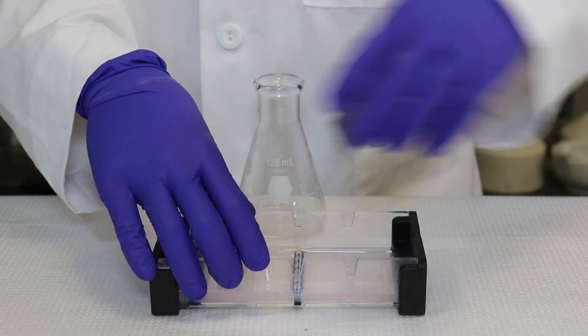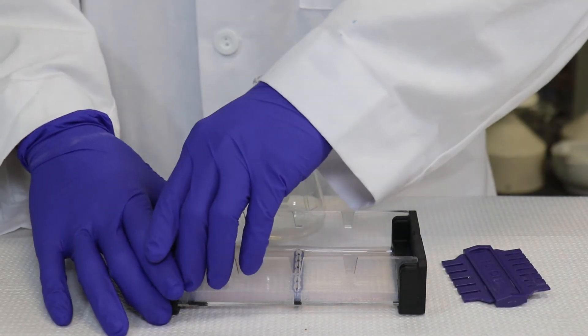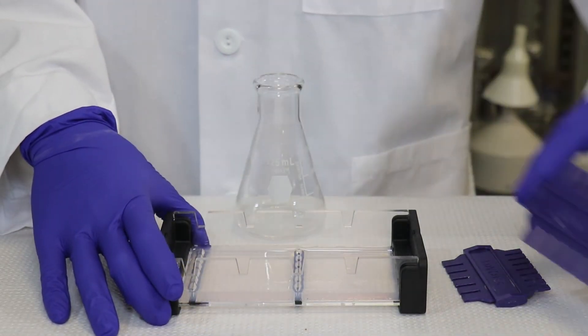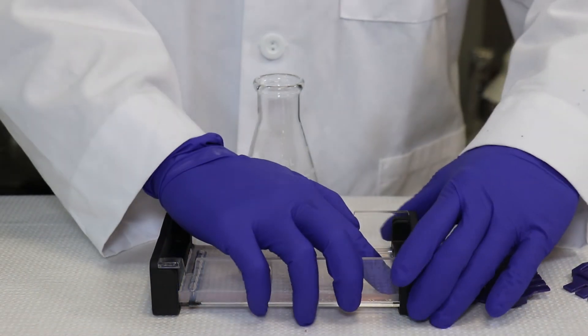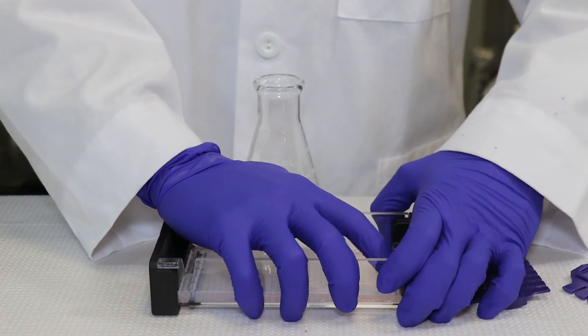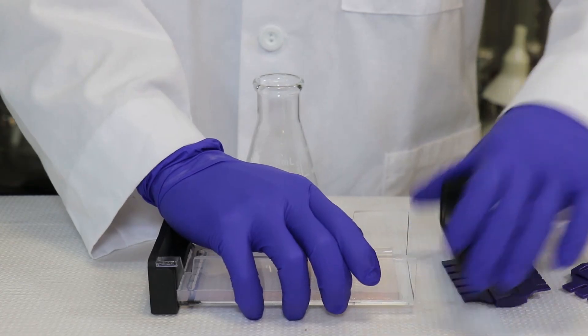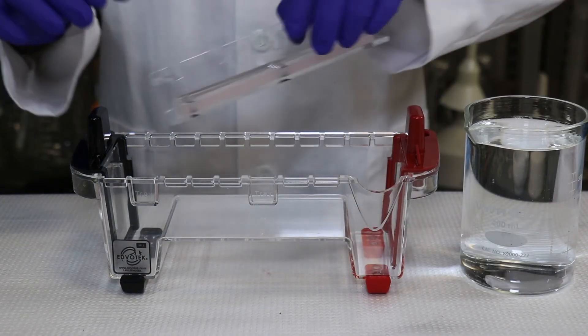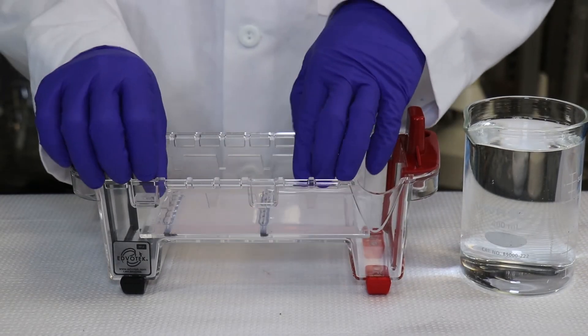Step 7: Carefully remove the end caps and comb. Take particular care when removing the comb and end caps to prevent damage to the newly formed wells. Step 8: Place the gel and tray into an electrophoresis chamber.